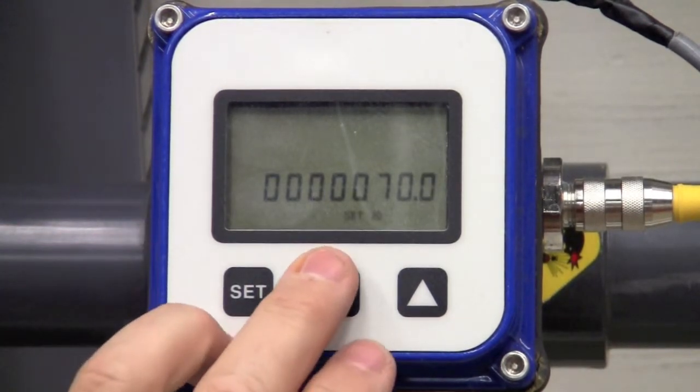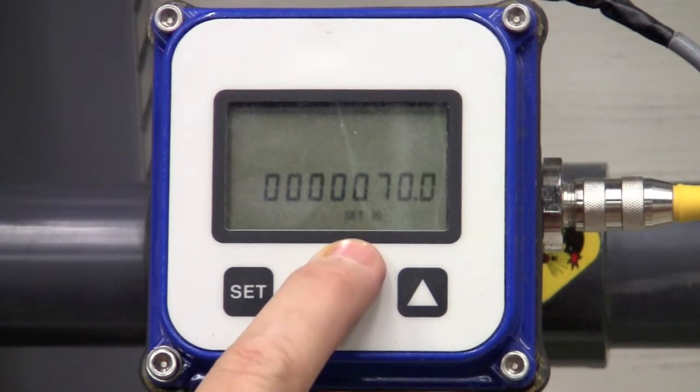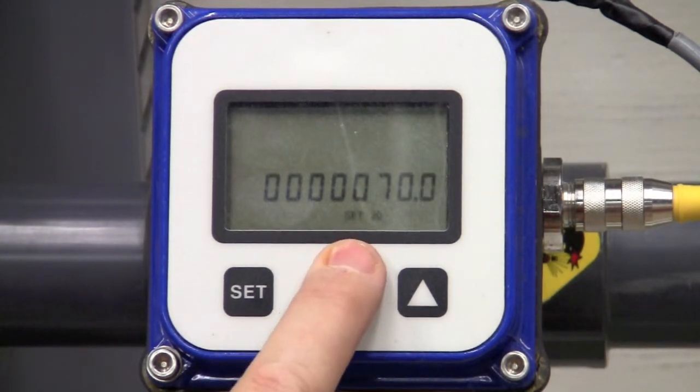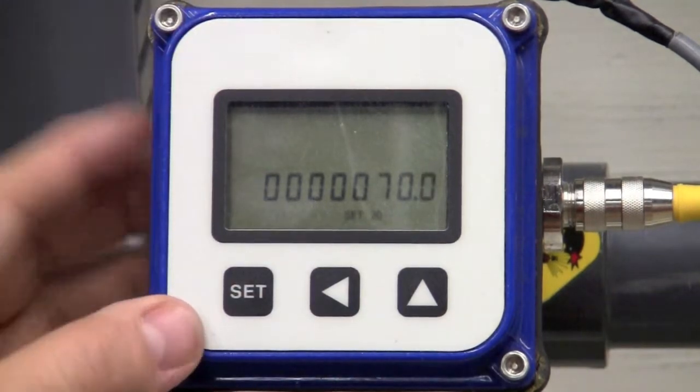The next parameter you put in is your 20 milliamps or your span. This will be the output to a PLC, or DCS, or chart recorder, or whatever you're doing with a 4 to 20 milliamp signal. Typically, 4 milliamps will output at zero, and what we're doing here is setting the 20 milliamp. Right now, I have it at 70 gallons per minute.